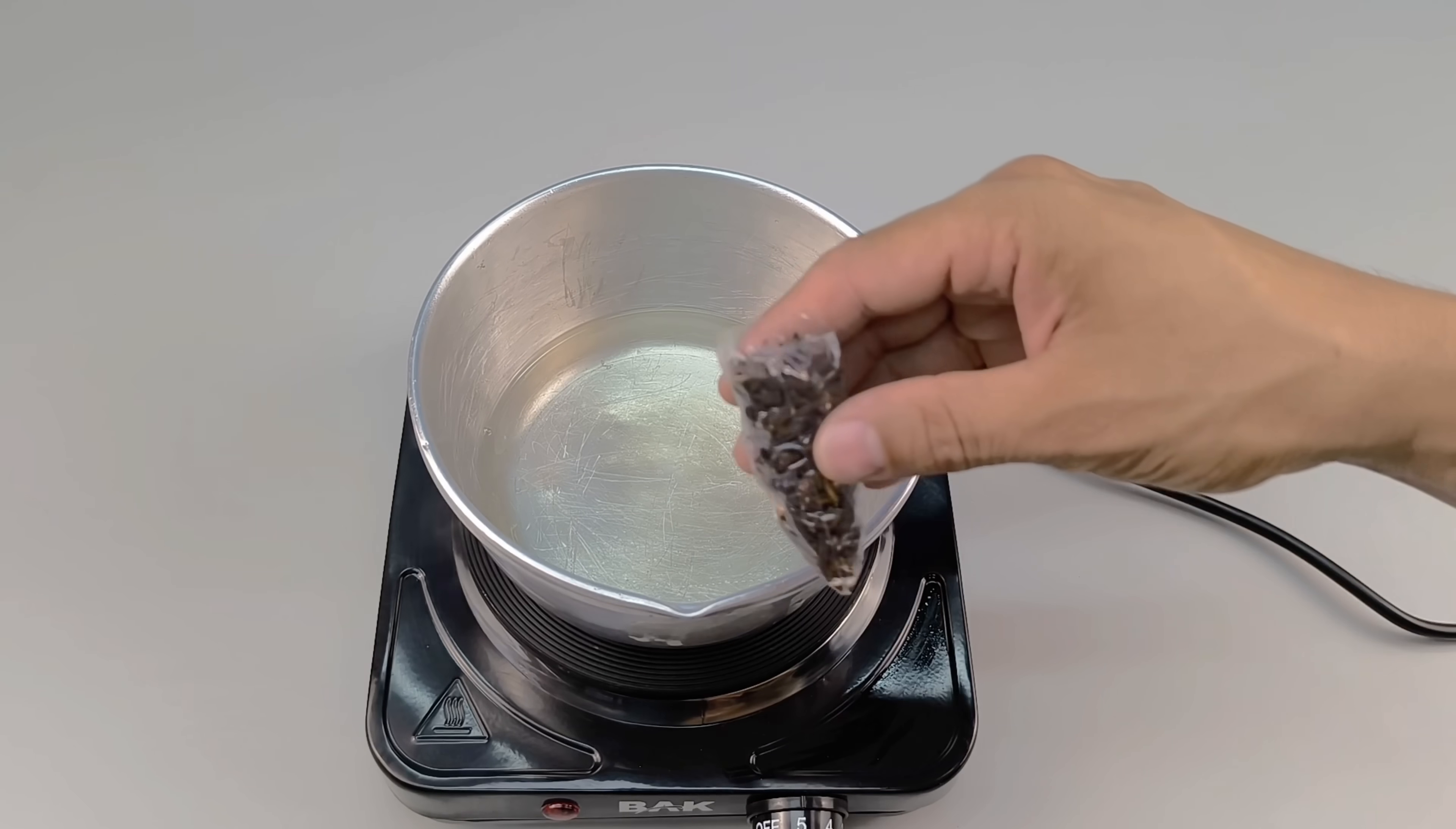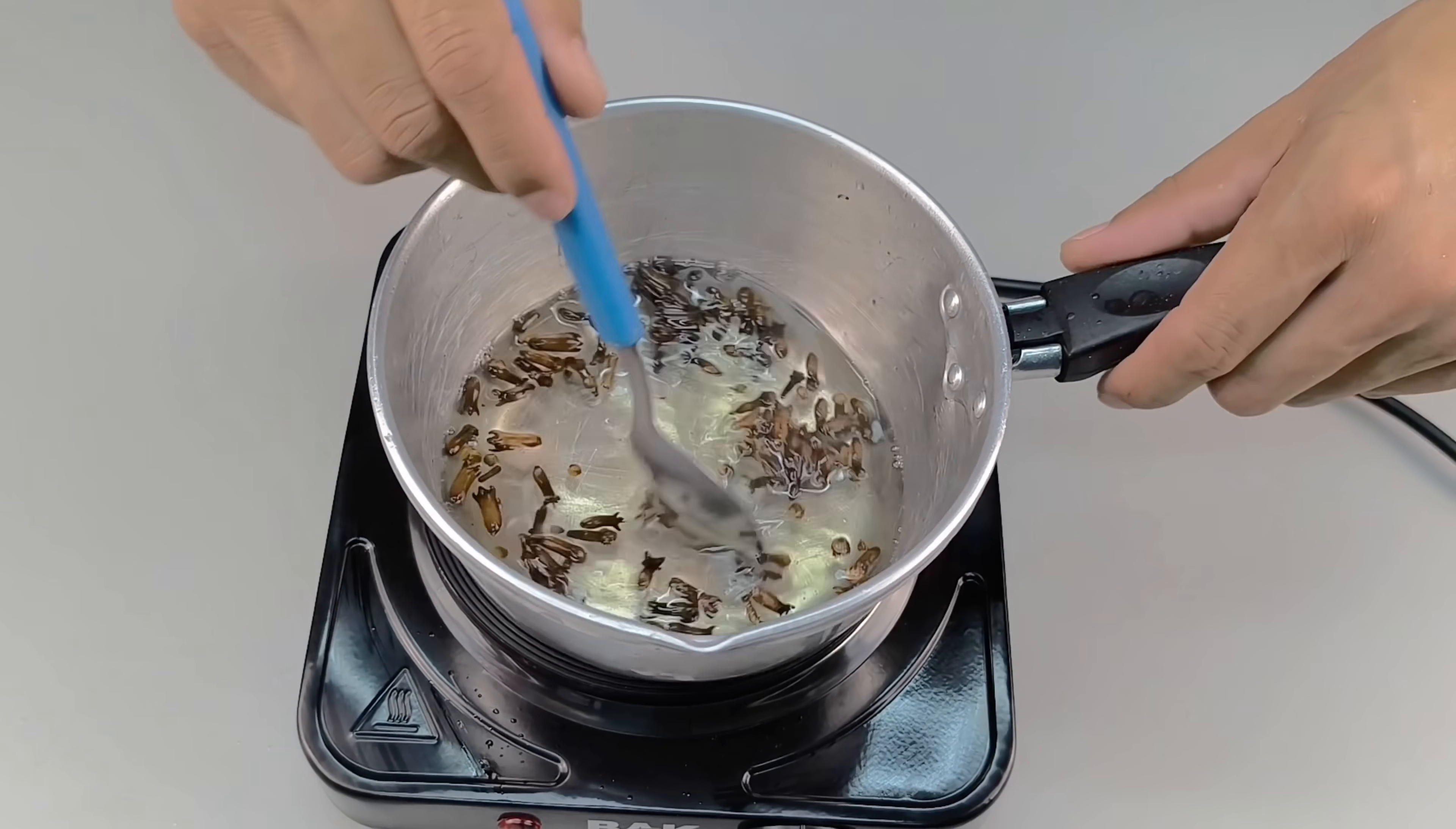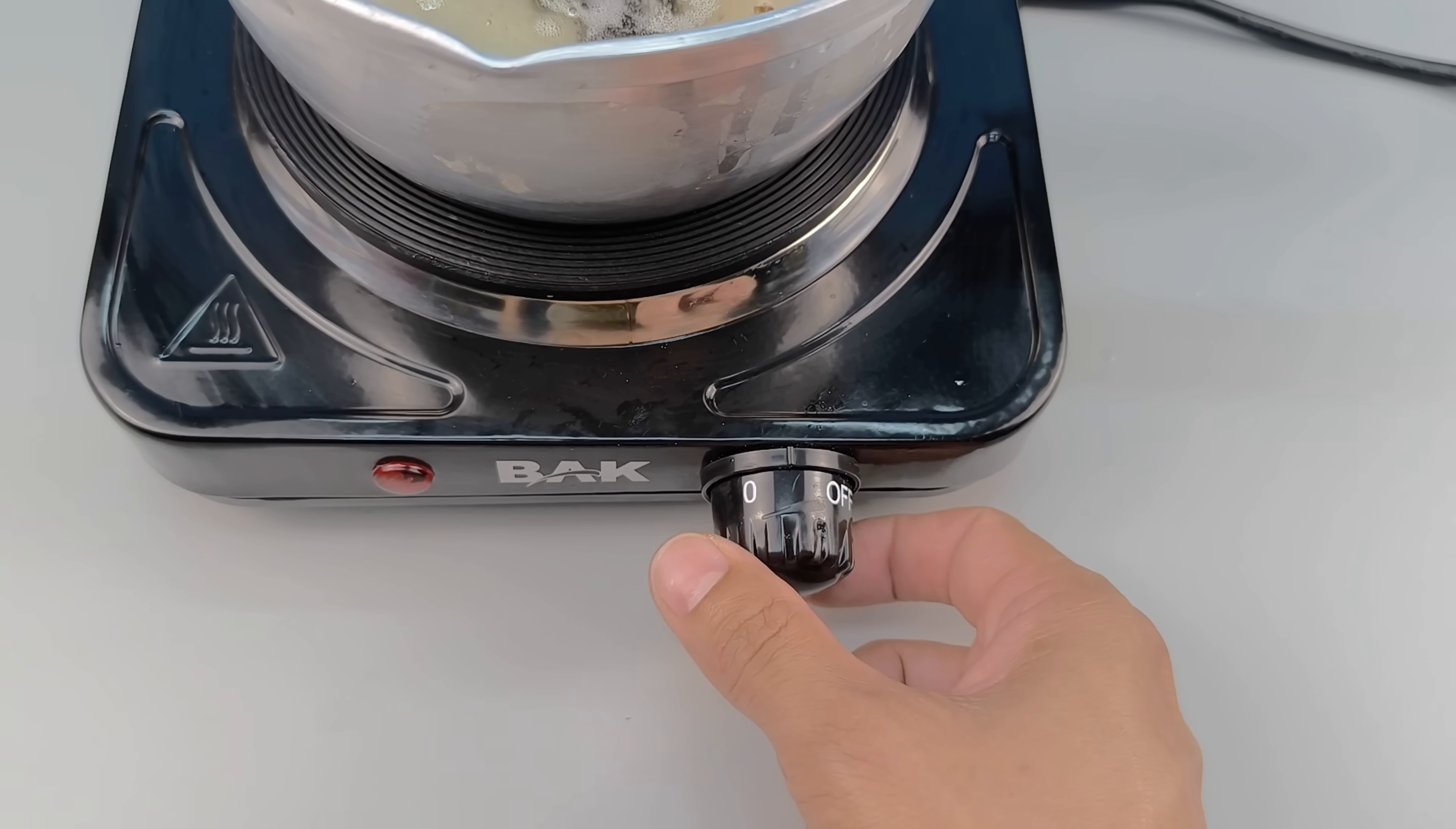With the wax still on the heat, it's time to add the second secret ingredient, cloves. They have a striking aroma, surprising natural properties, and will completely transform the final result of your candle. Pour a generous amount of cloves directly into the melted wax and continue stirring slowly to ensure the active ingredients are well incorporated.